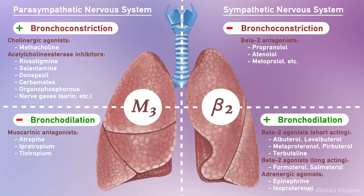Beta-2 receptor antagonists are of no clinical significance for bronchial asthma treatment. Moreover, this class of medications should be contraindicated in patients with bronchial asthma, as blockade of beta-2 adrenergic receptors causes bronchoconstriction. Propranolol is a non-selective antagonist that blocks beta-1 and beta-2 receptors, and metoprolol, atenolol, and others are representatives of beta-1-selective antagonists.